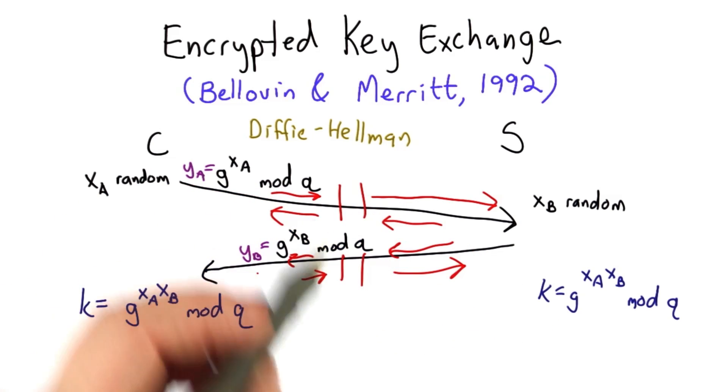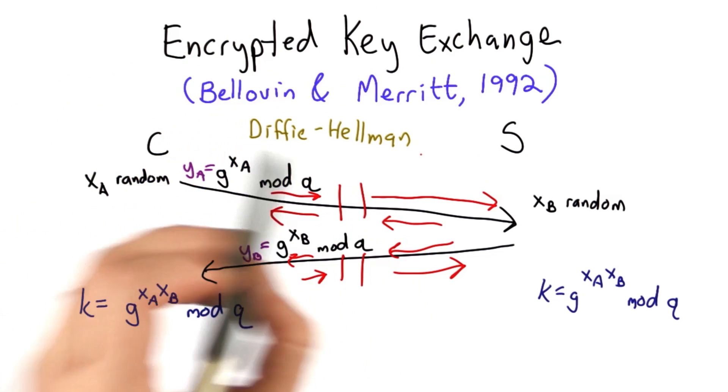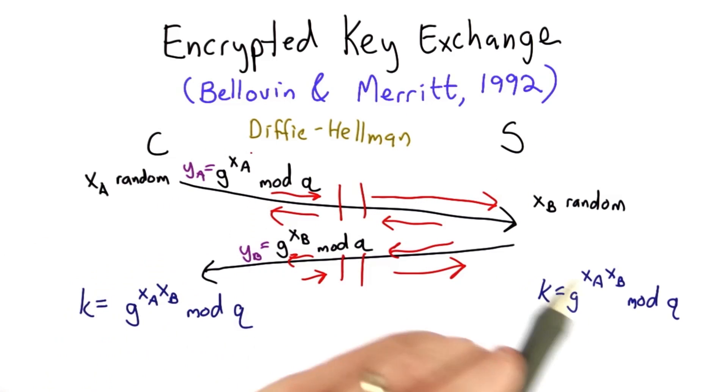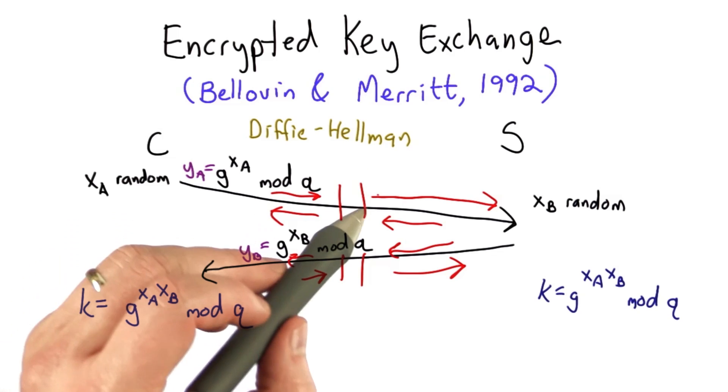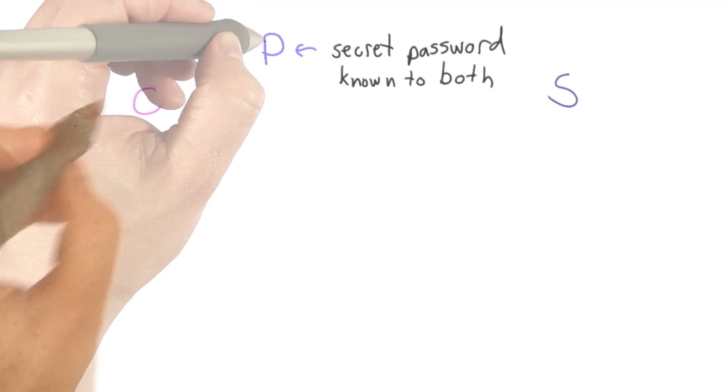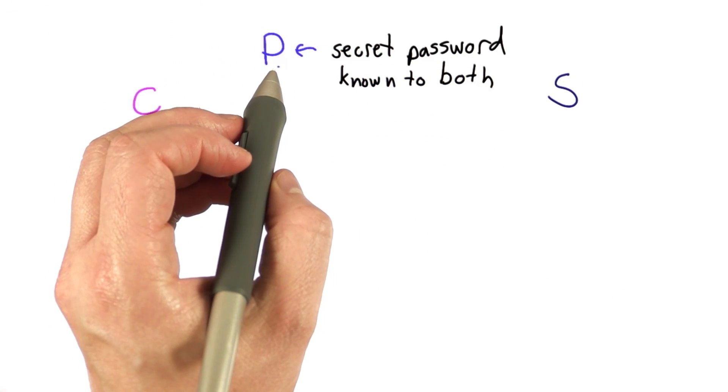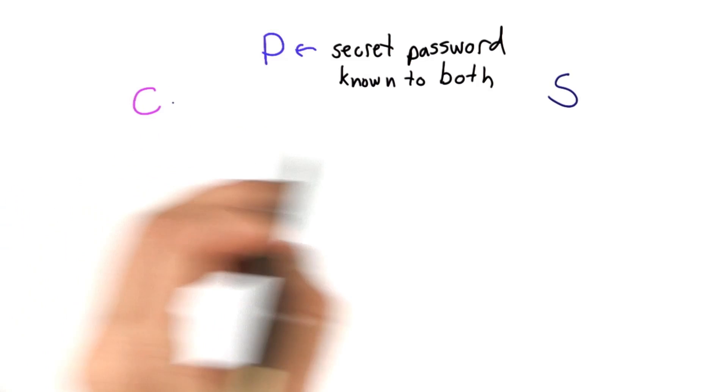The attacker can act as the middle attacker, intercepting all the traffic because the attacker knows the keys on these two separate channels. The idea of encrypted key exchange is to combine this with symmetric encryption to allow the client and server to authenticate each other even if there's a middle attacker. Here's how it works. Assume there's some password that at the beginning of the protocol is known to both the client and the server.